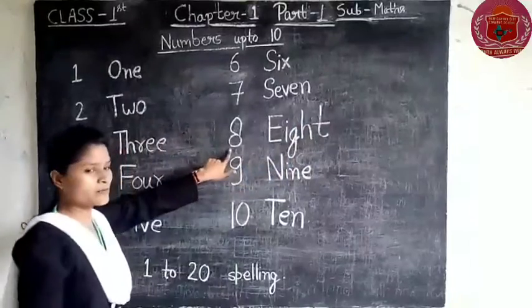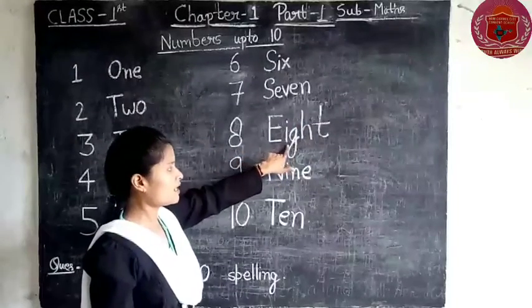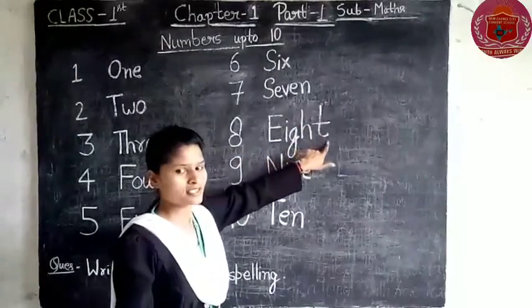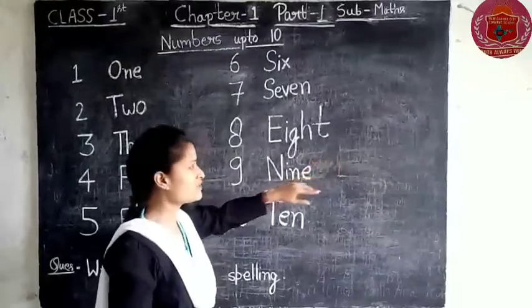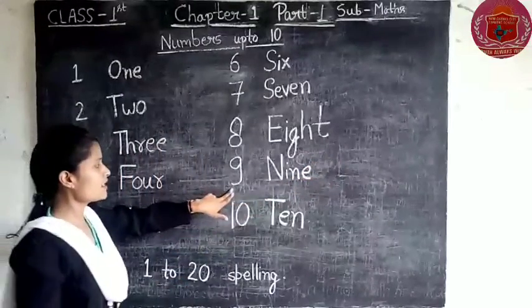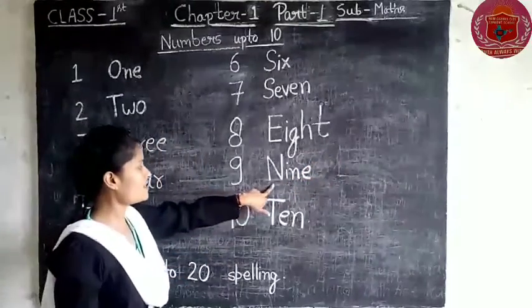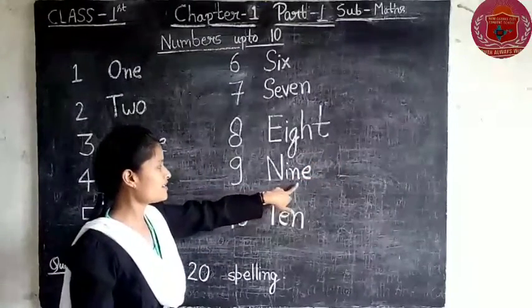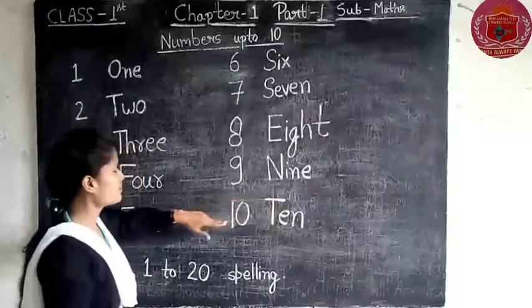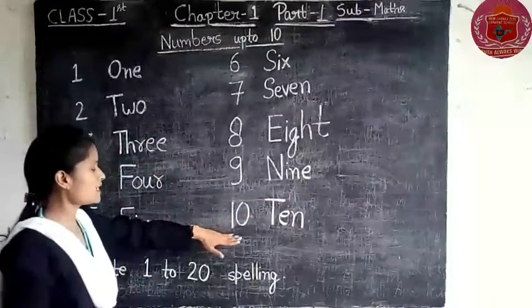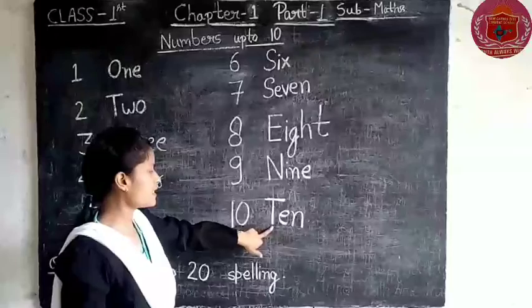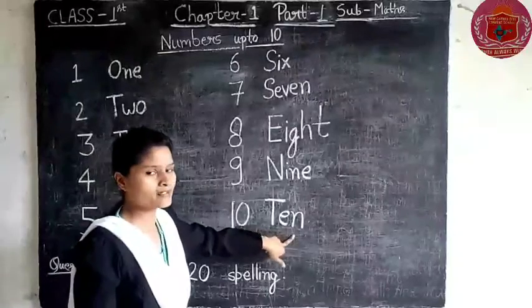Next is 8, written as E-I-G-H-T. Next is 9, written as N-I-N-E. Next is 10, written as T-E-N.